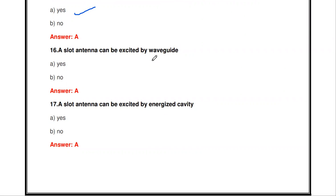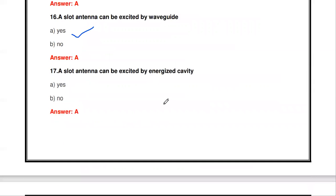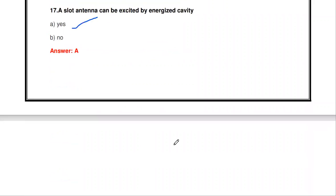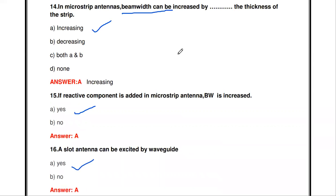Now for slot antenna questions. A slot antenna can be excited by a waveguide — correct. A slot antenna can also be excited by an energized cavity or a coaxial transmission line. So using a waveguide, energized cavity, or transmission line, we can excite a slot antenna.